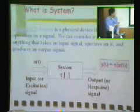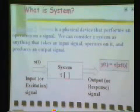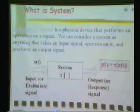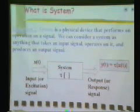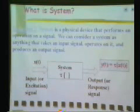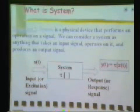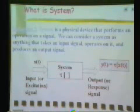For the system, we can have a block diagram. You have the input coming in — sometimes you call that the excitation signal — and then you pass it to the system. The system is something that operates and does something on the input and generates the output, a different signal, which we call the output or sometimes the response.